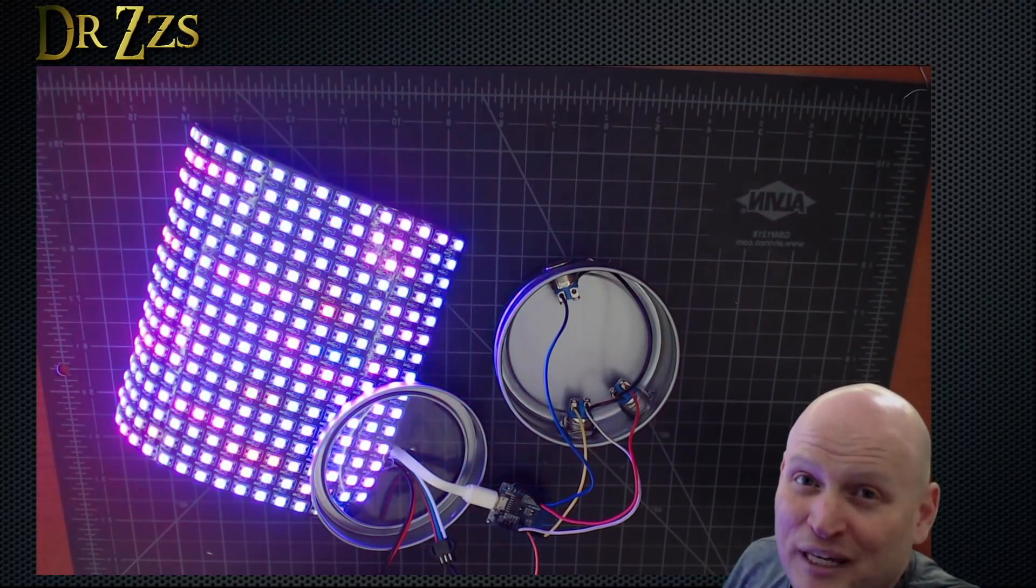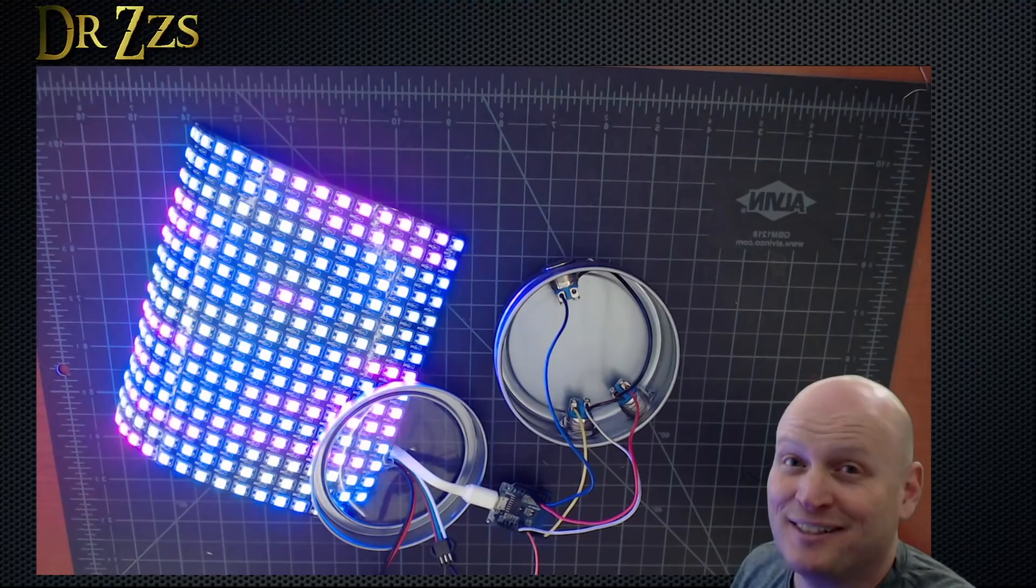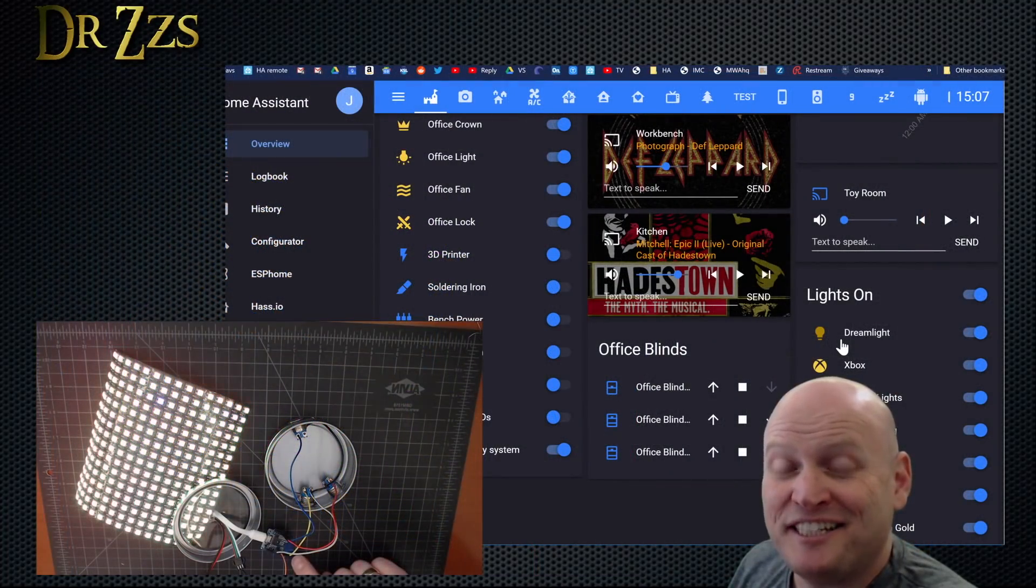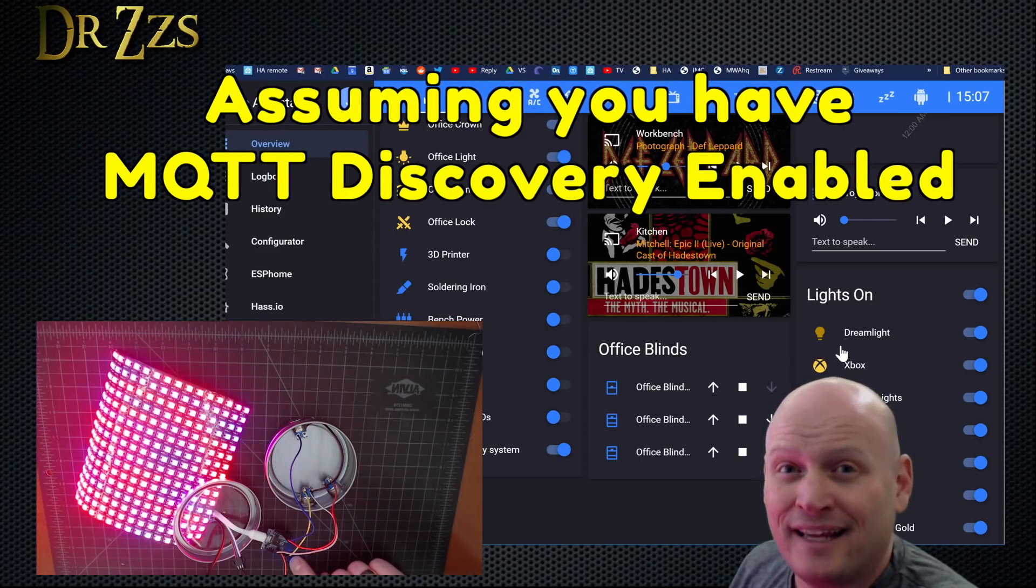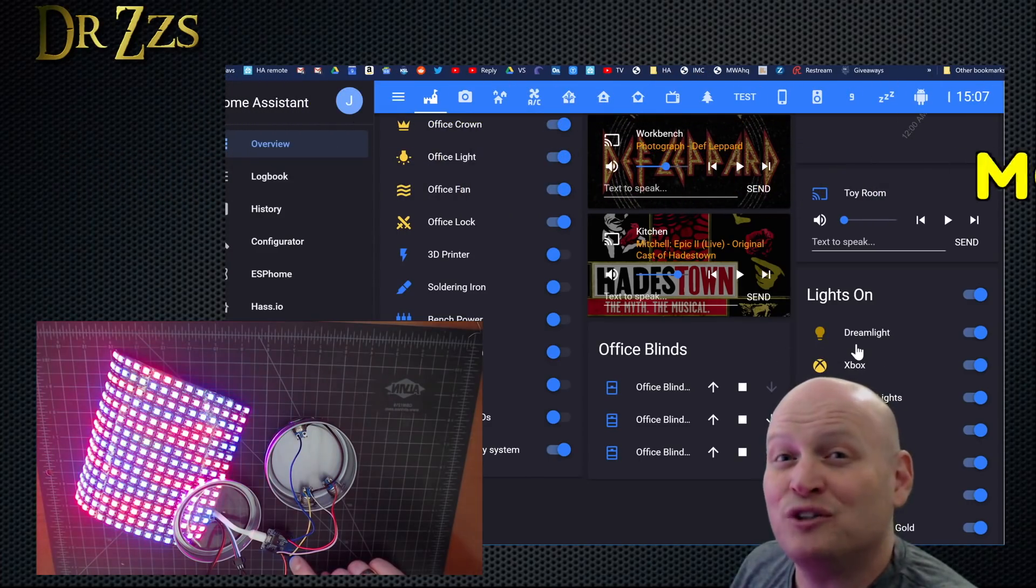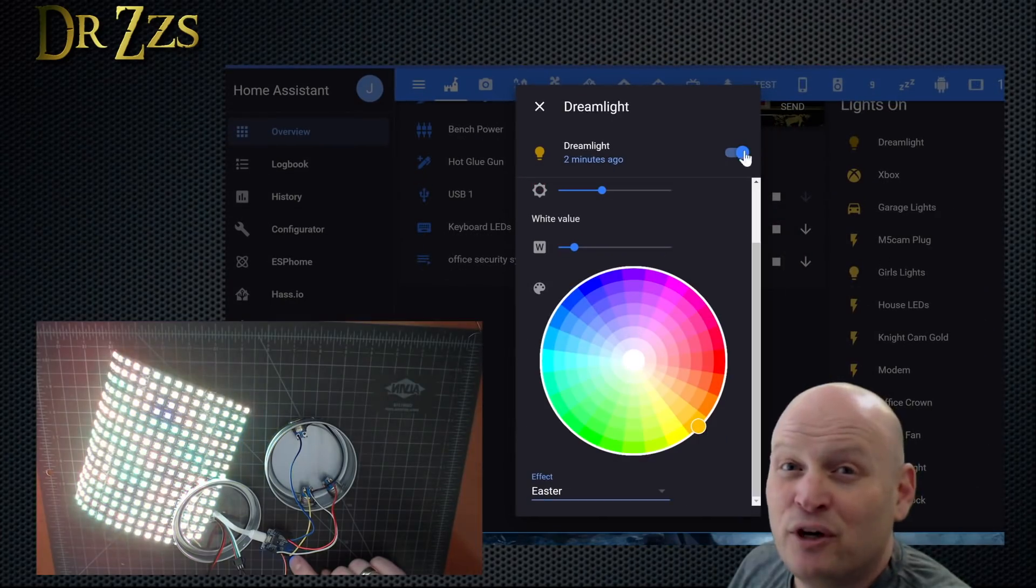Now, of course, this wouldn't be complete without Home Assistant control. When you have the pinky LED sketch running on the D1 Mini, Home Assistant will auto-discover a new light entity. For me, it's called Dreamlight. From here, you can turn it on and off. You can change the brightness.